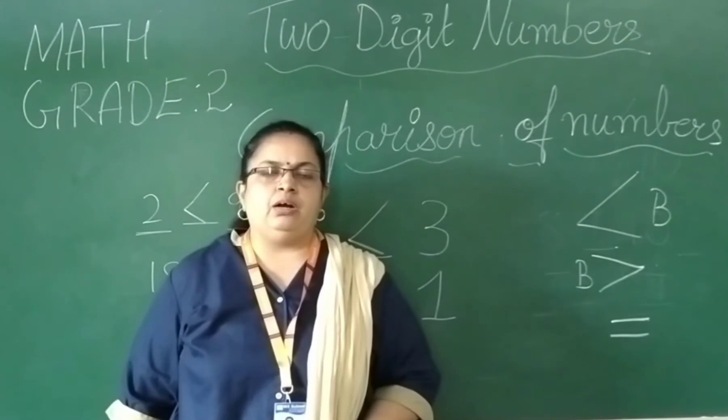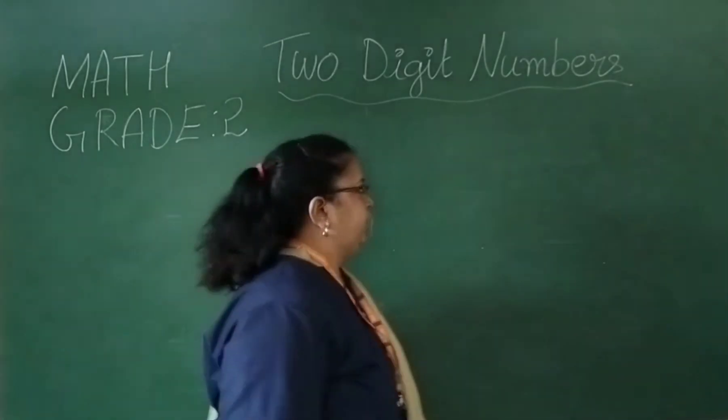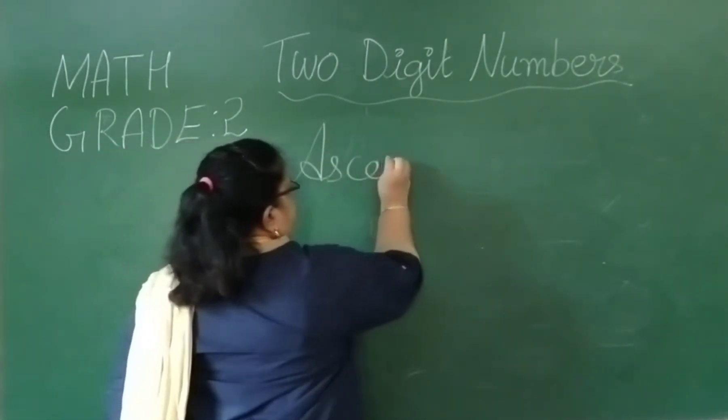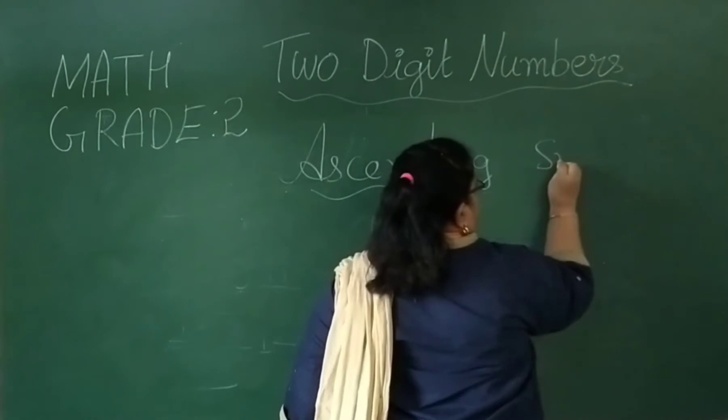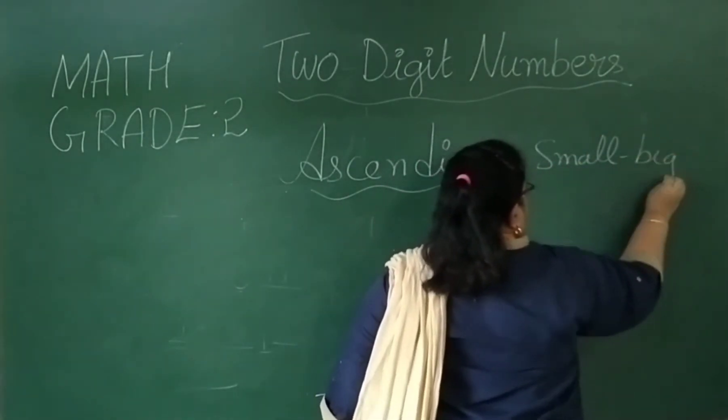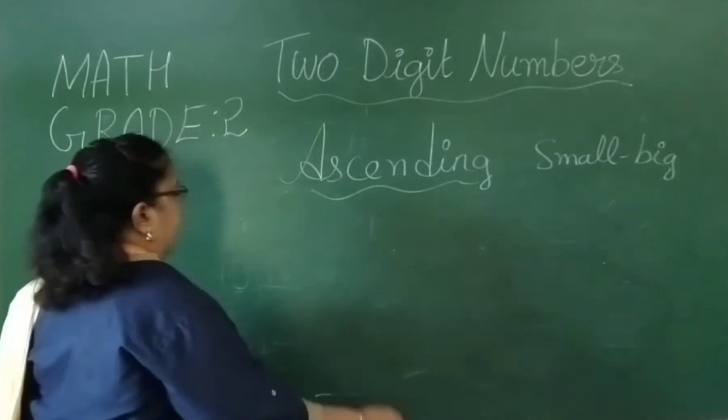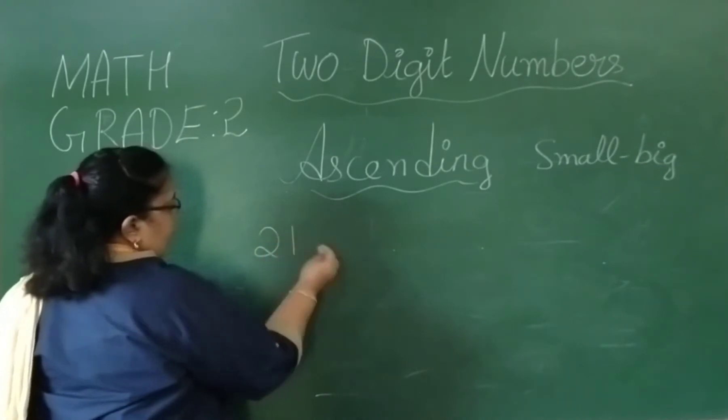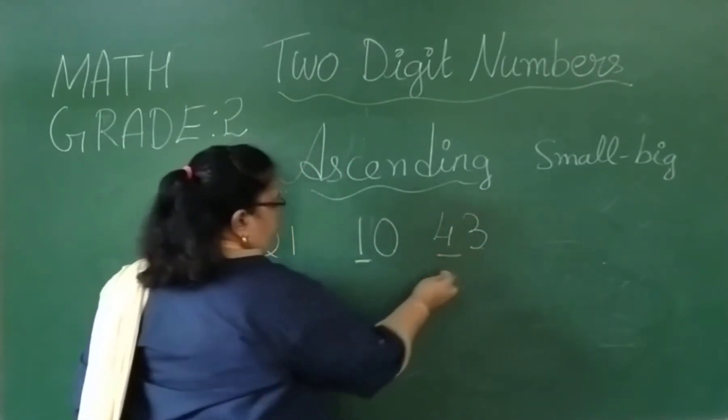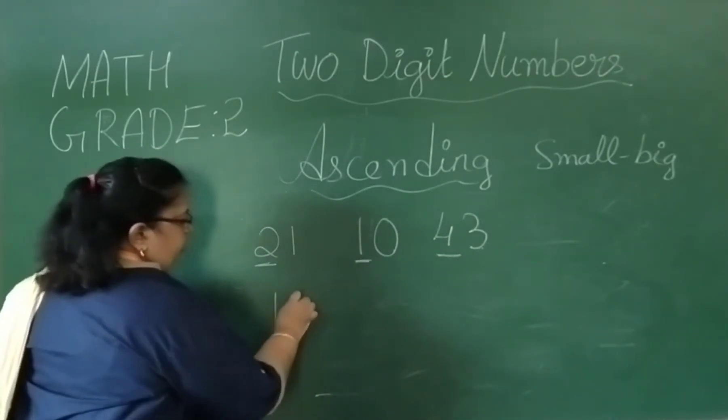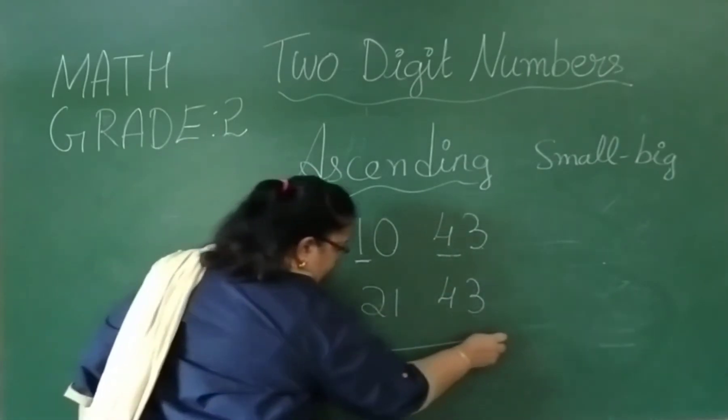I hope you are clear with the comparison. Let me teach you about the ascending and the descending. Ascending, A-S-C-E-N-D-I-N-G, ascending order. Here it is small to big. That is, you can do the order 1, 2, 3, 4, which is the number.